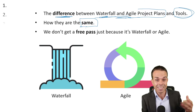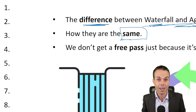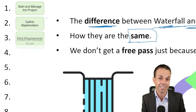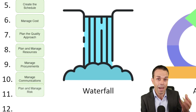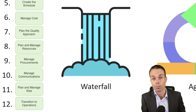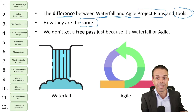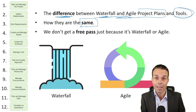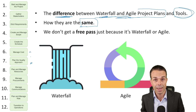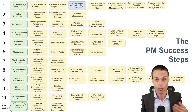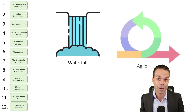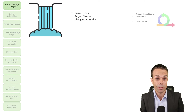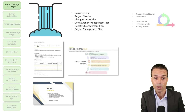We don't get a free pass on our project just because it's Agile or just because it's Waterfall. We still have to go through and manage each of these items: the scope, the stakeholders, the schedule, the cost, the quality — all of these things we still have to manage as we're delivering a new product. Let's get into the differences between Agile and Waterfall project management plans, starting right at the top where we begin in a normal project.